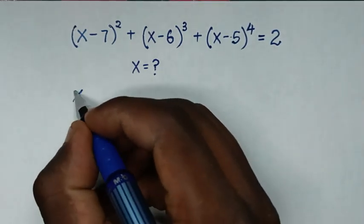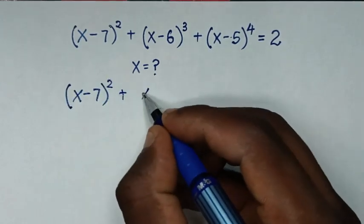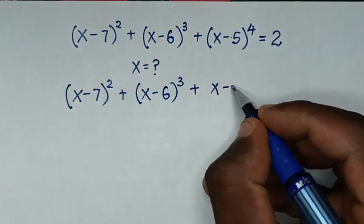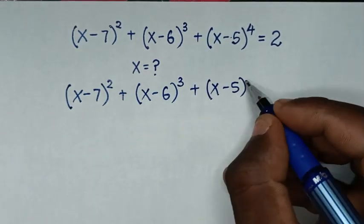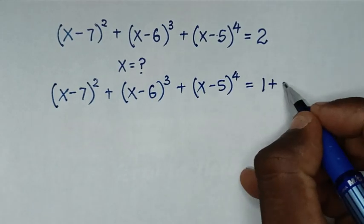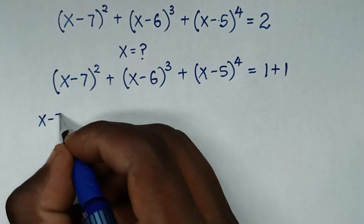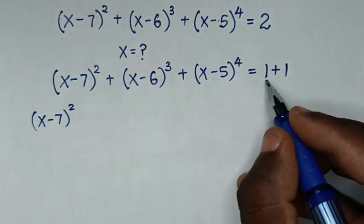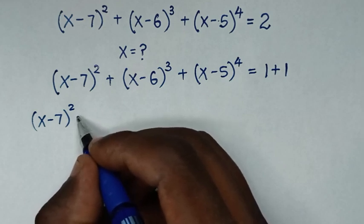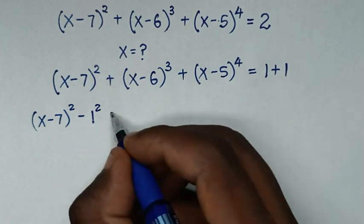From the problem, (x minus 7) squared plus (x minus 6) to the power 3 plus (x minus 5) to the power 4 equals 2, which is the same as 1 plus 1. We take the 1 to the left side, so it will be minus 1. To set up a difference of two squares, minus 1 is the same as 1 squared.